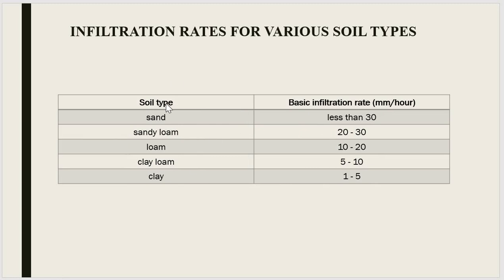Different soil types have different basic infiltration rates. Sand has an infiltration rate greater than 30 mm per hour, sandy loam is 20 to 30, loam is 10 to 20, clay loam is 5 to 10, and clay is 1 to 5 mm per hour. From this, we can understand that the infiltration rate is very high in sandy soil and very low in clay type soil.